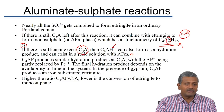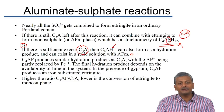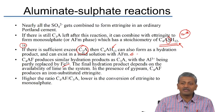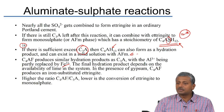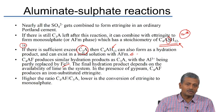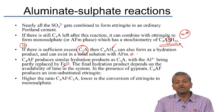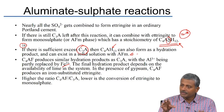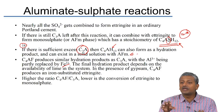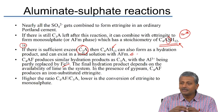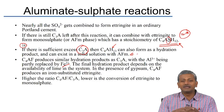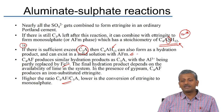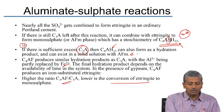A balance must be maintained between C3A and C4AF contents. When C3A is low, C4AF is automatically high. C4AF is largely a non-reactive phase because bringing iron into solution takes a very long time. Therefore, the higher the ratio of C4AF to C3A, the lower is the conversion of ettringite to monosulphate.